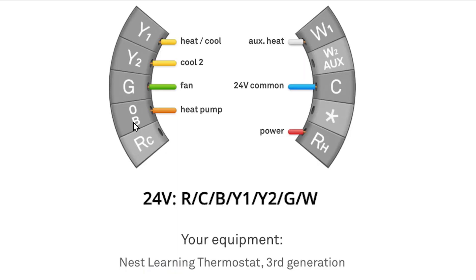This is a graphical representation that you can pull from the app, or you'll see it on the screen of your Nest third-generation Learning Thermostat. I've added descriptions here: Y1 is heat/cool, Y2 is cool stage 2, G is your fan, and the OB wire is your heat pump.